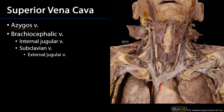The major contributors to the superior vena cava are the left brachiocephalic vein and the right brachiocephalic vein. Notice that the left brachiocephalic vein is longer and more oblique than the right brachiocephalic vein, as it's draining things from left of the midline, and so to get to the superior vena cava takes quite a bit of distance.